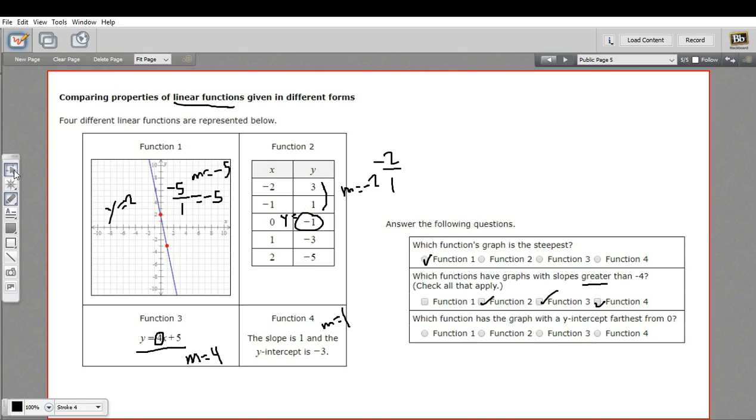In this one, in the equation, you can tell the y-intercept because it's the number part that's added or subtracted. So our y-intercept here is a positive five. That's pretty far away. And in function four, they just tell us the y-intercept is negative three. That's only three spaces away from zero. So function three has definitely got the y-intercept that's farthest away from zero.